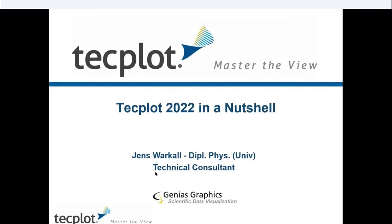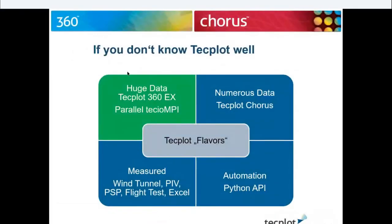If you have never seen TechPlot before, we have different flavors. If you have huge data sets, TechPlot 360 EX is the right choice. If you want to write out data from your cluster, Parallel TecIO MPI would be the right choice. There is also a specific format called subzone load on demand. If you have to do with parametric studies and numerous data — say 100 simulations for parametric runs — TechPlot Chorus would be the right choice.